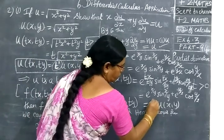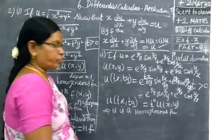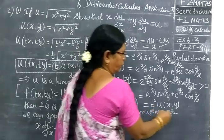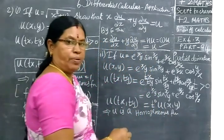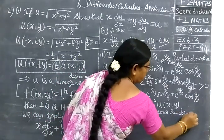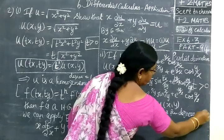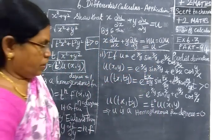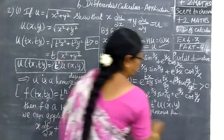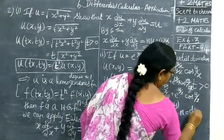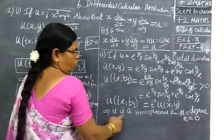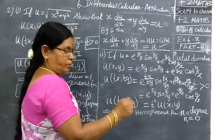Since u of tx, ty equals t power 0 times u of x, y, and t power 0 equals 1, the degree of the homogeneous function is 0. So u is a homogeneous function with degree equal to 0, where n equals degree equals 0.